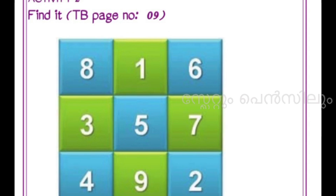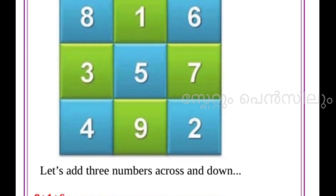The next line: 3, 5, 7. Then 4, 9, 2. These are the other numbers across and down. Down item first: 8 plus 3 plus 4. Next: 1 plus 5 plus 9. Next: 6 plus 7 plus 2. Add 3 numbers — calculate and practice. Do it in a good way.